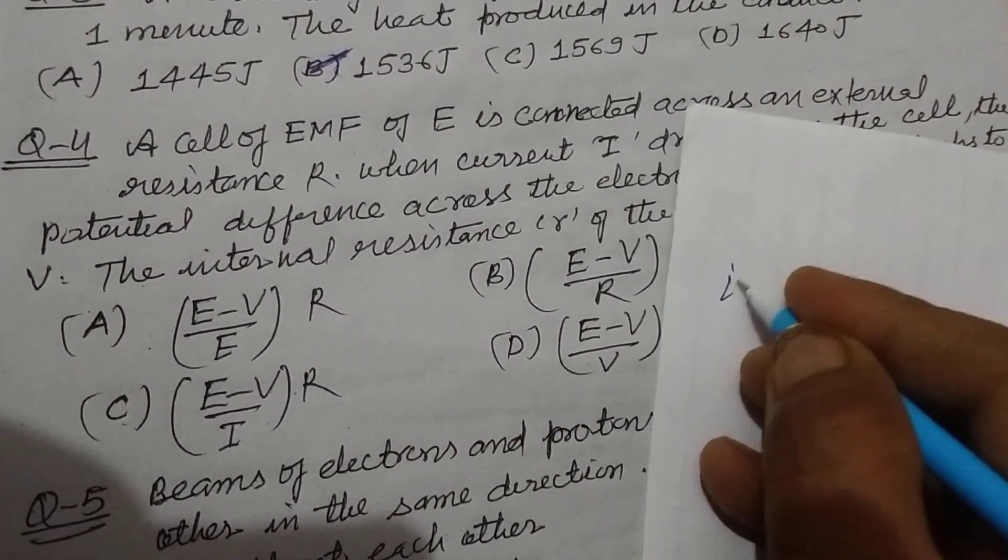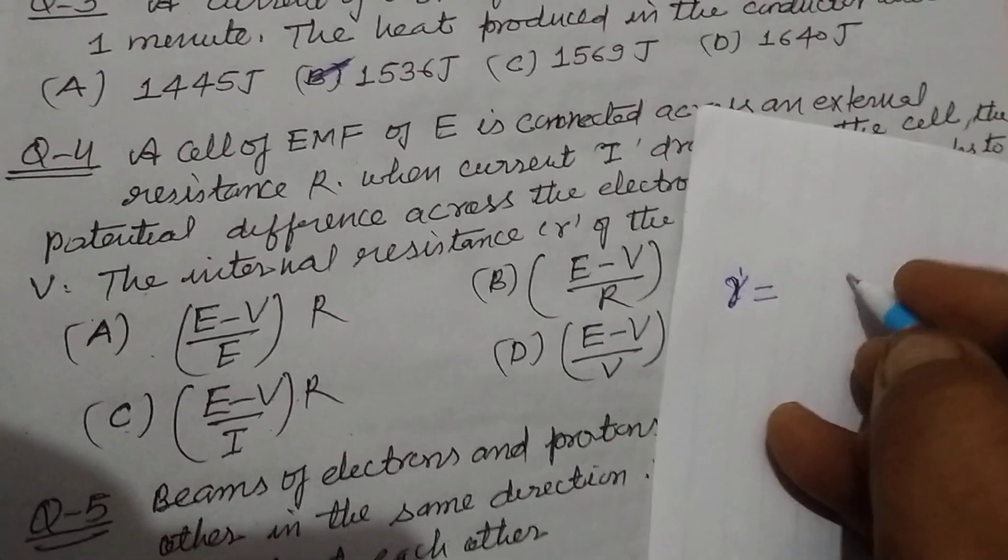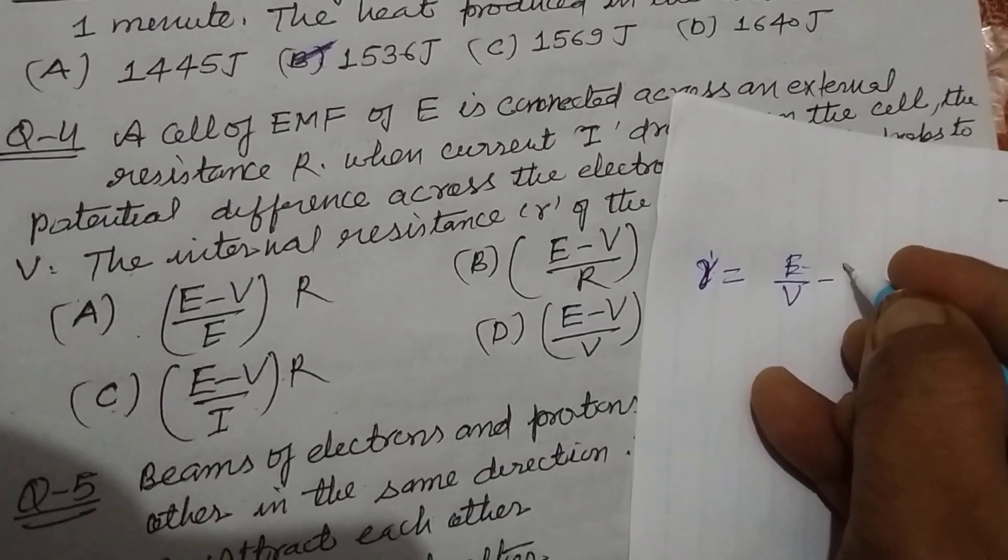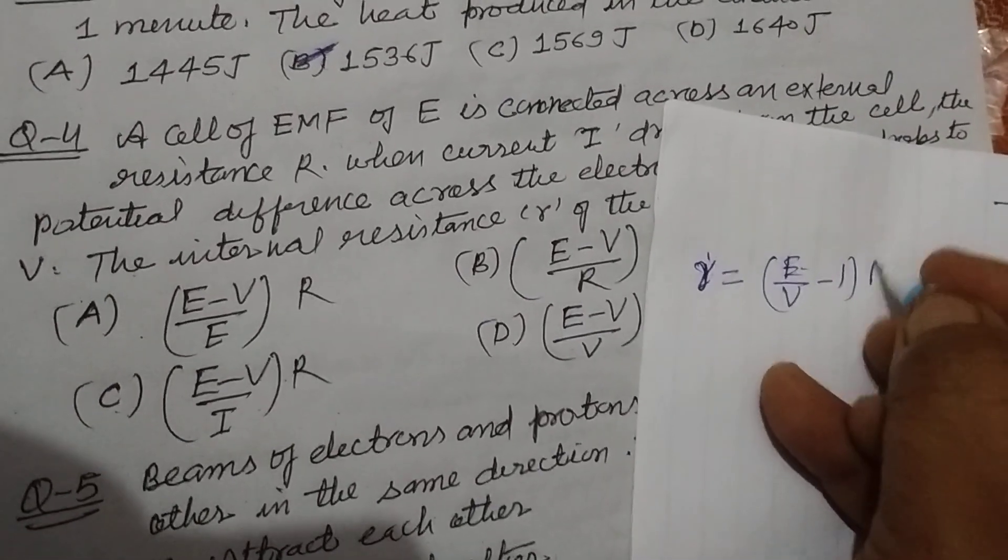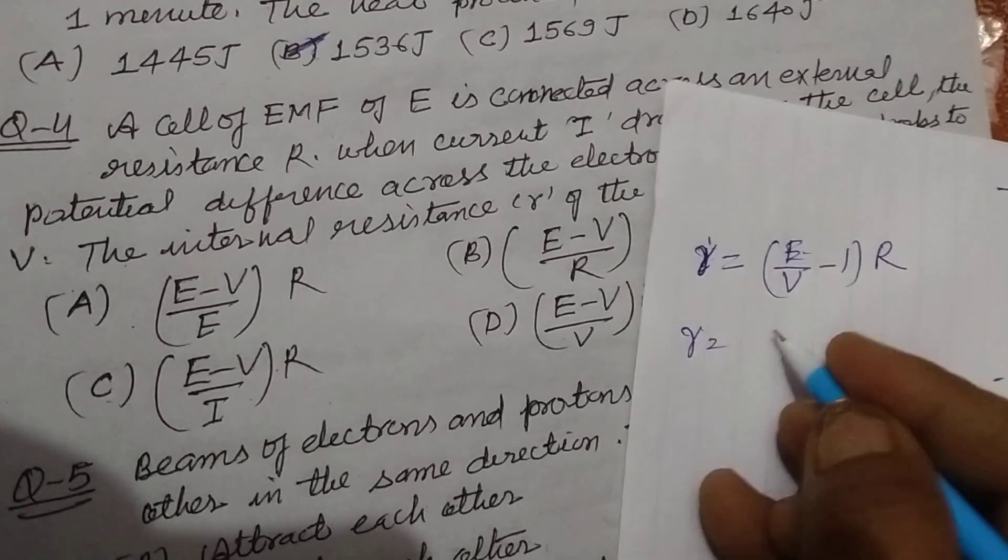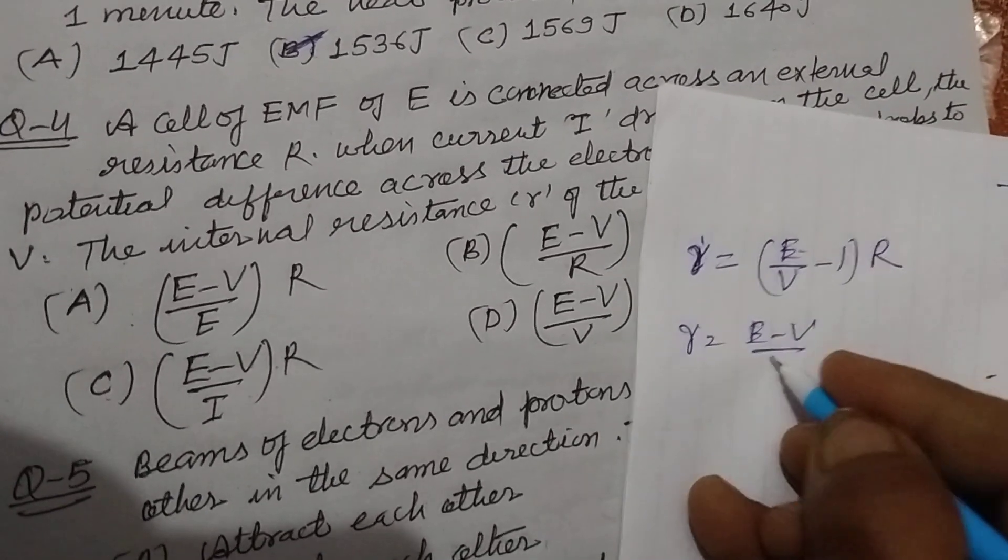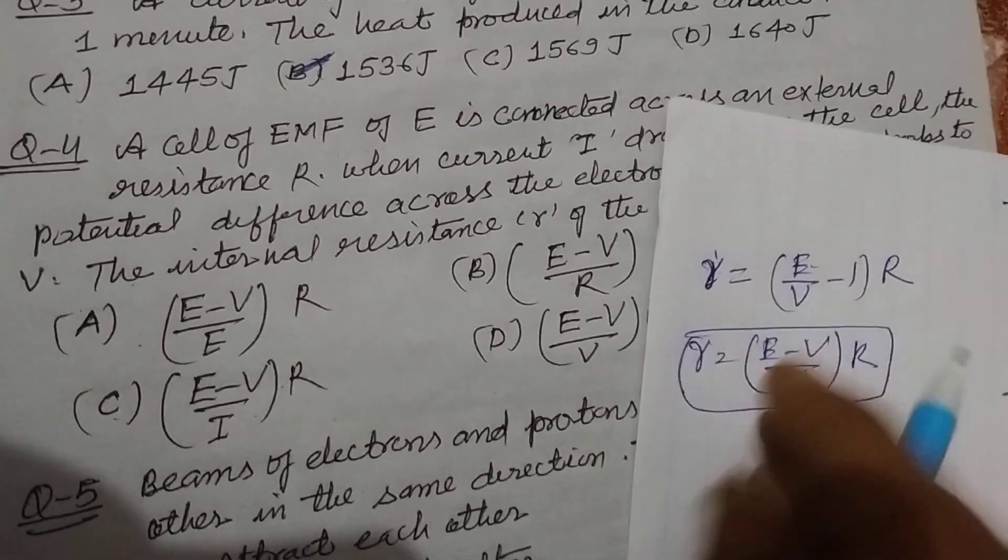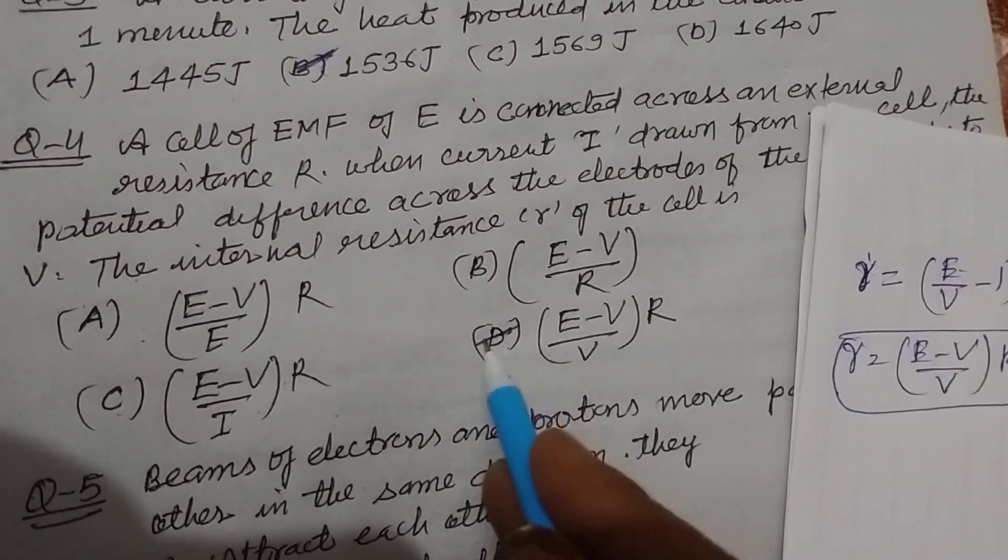So this is also a question directly based on formula. So r, which is internal resistance, equals E upon V minus 1 into R. This is the internal resistance of the cell. So r equals (E-V)/V into R, which is given in option D of this question.